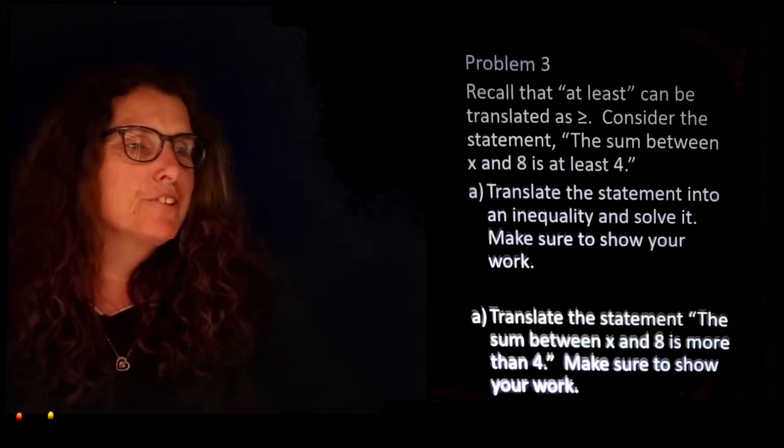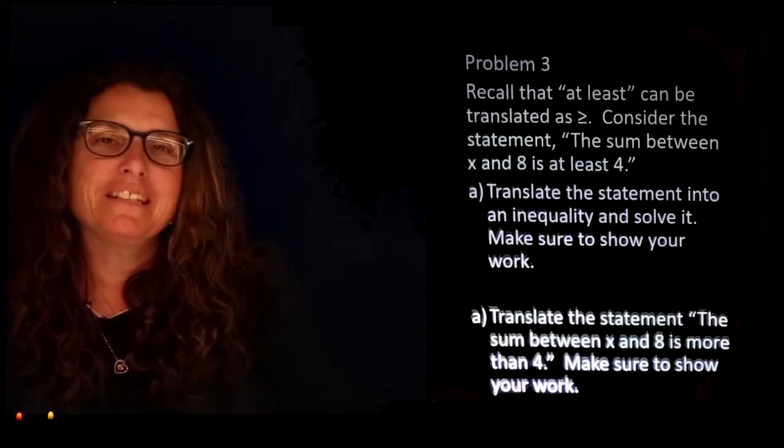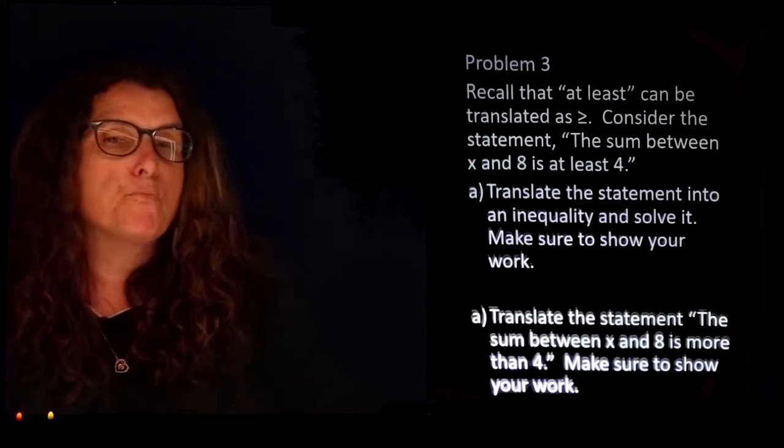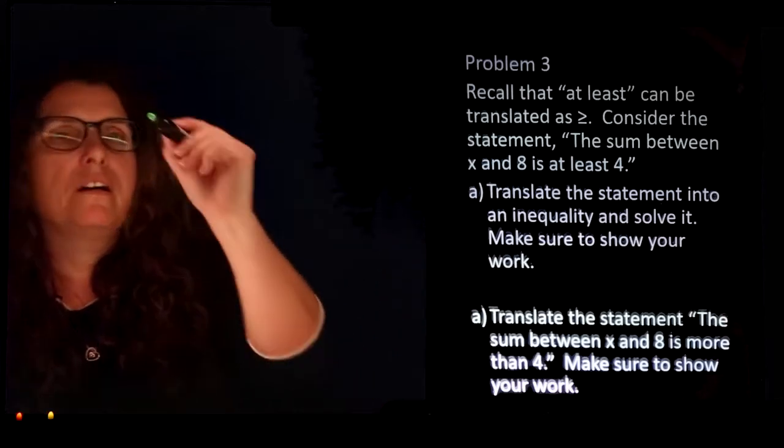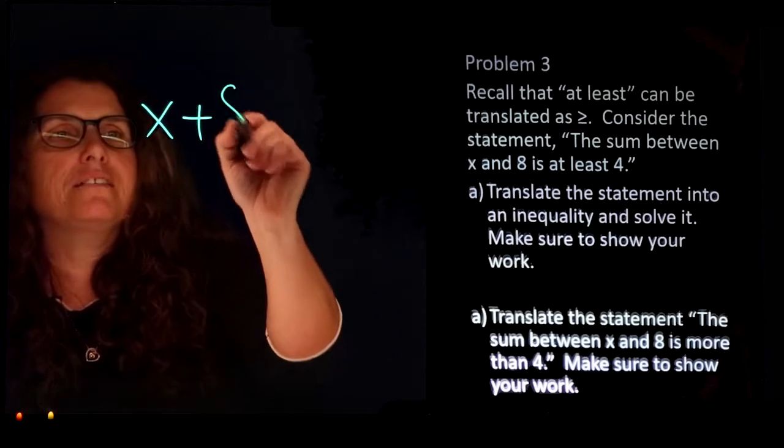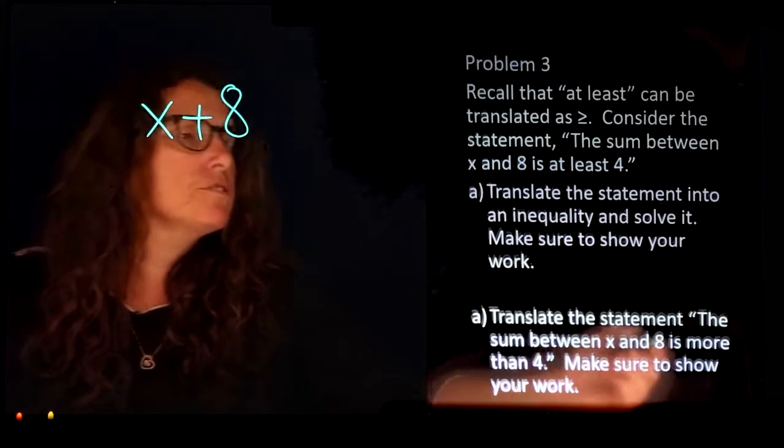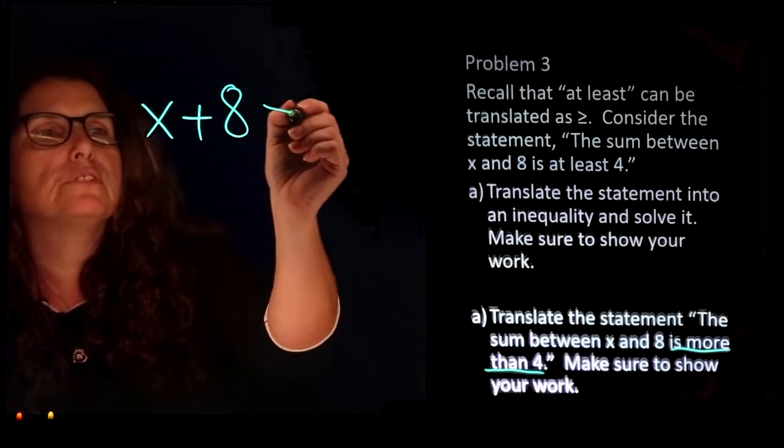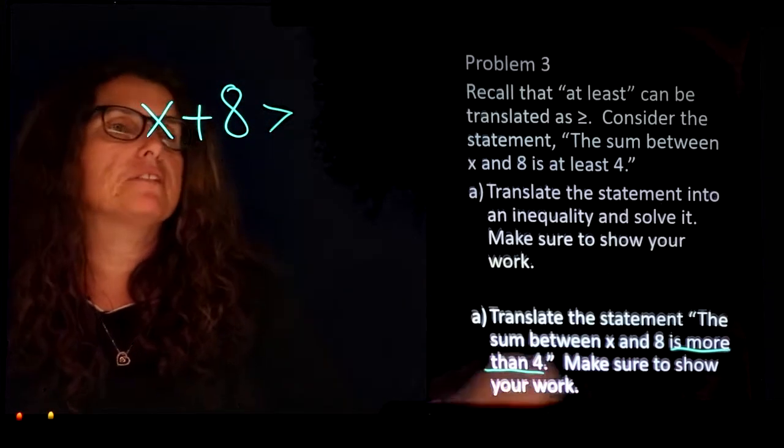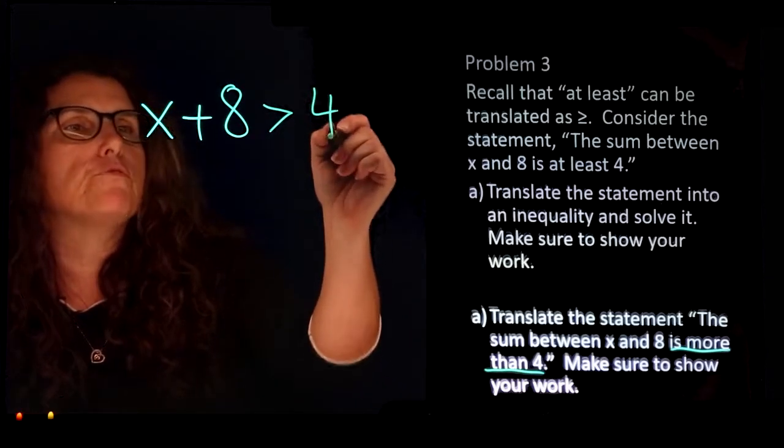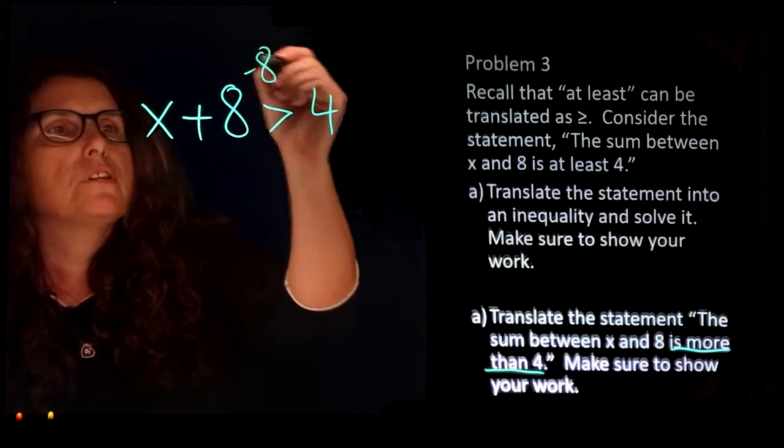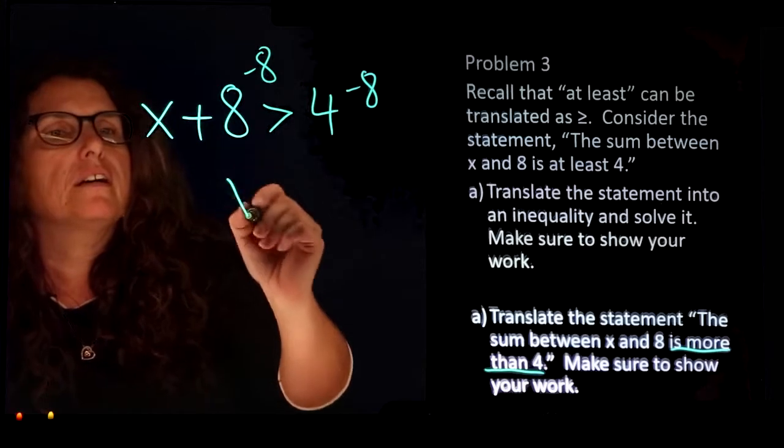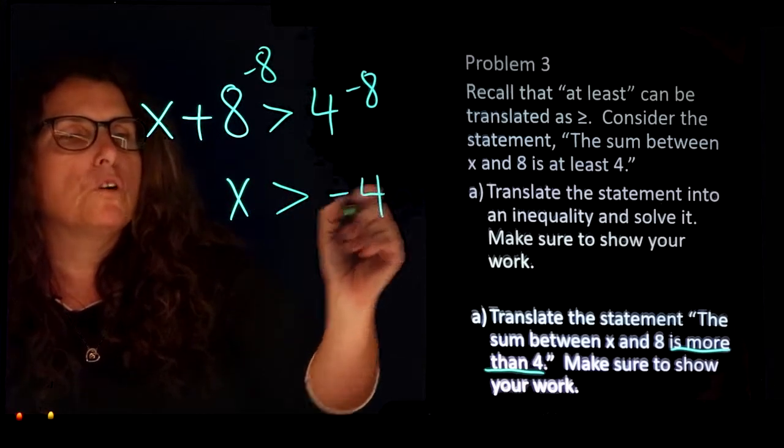The last problem is: the sum between x and 8 is more than 4. x plus 8 more than 4, so this time 4 is not included. We need a strictly greater than inequality—more than 4. Solving for x, we get x is greater than negative 4.